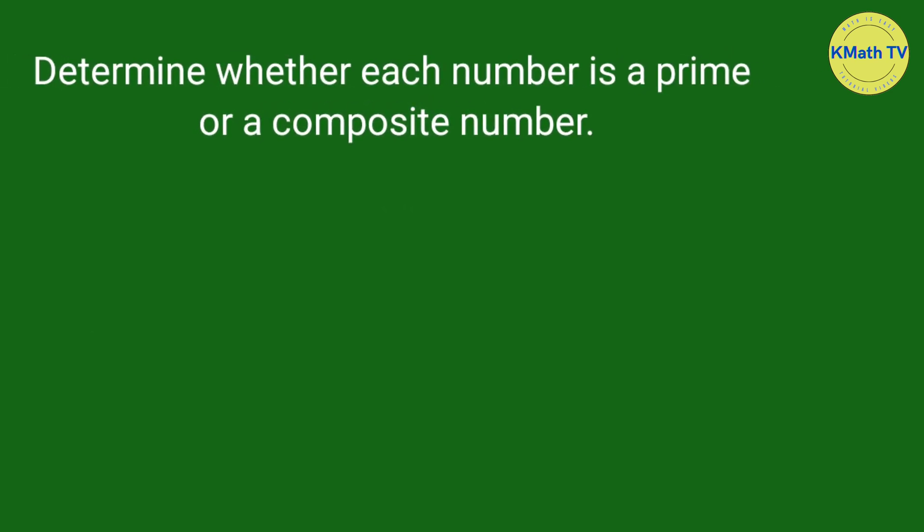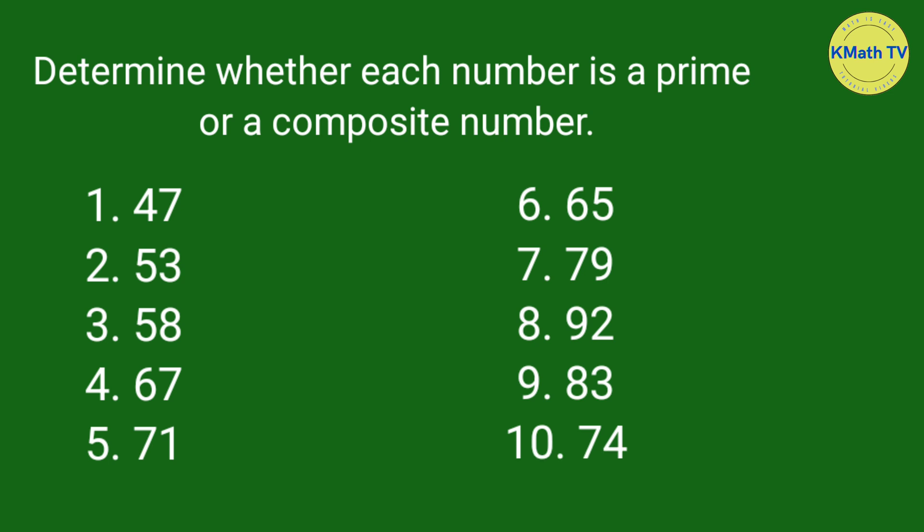This time, let's answer this activity. Determine whether each number is a prime or a composite number. Number 1, 47, prime number. Number 2, 53, prime number. Number 3, 58, composite number. Number 4, 67, prime.